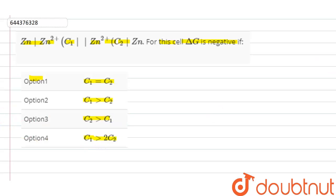Now in the given question, we have a concentration cell in which both oxidation and reduction of zinc is taking place.